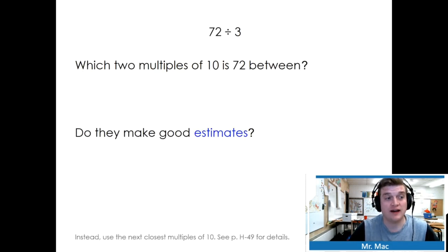72 divided by 3. Which two multiples of 10 is 72 between? It's between 70 and 80. Do they make good estimates? Well, 3 times 10 is 30. 3 times 20 is 60. 3 times 30 is 90. Neither of these make good estimates.